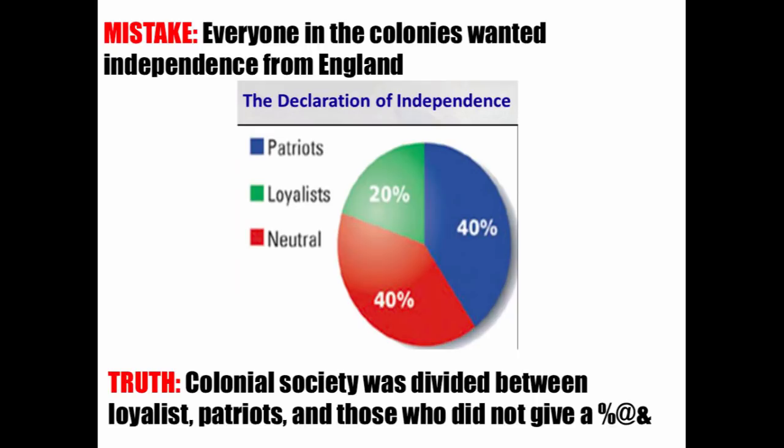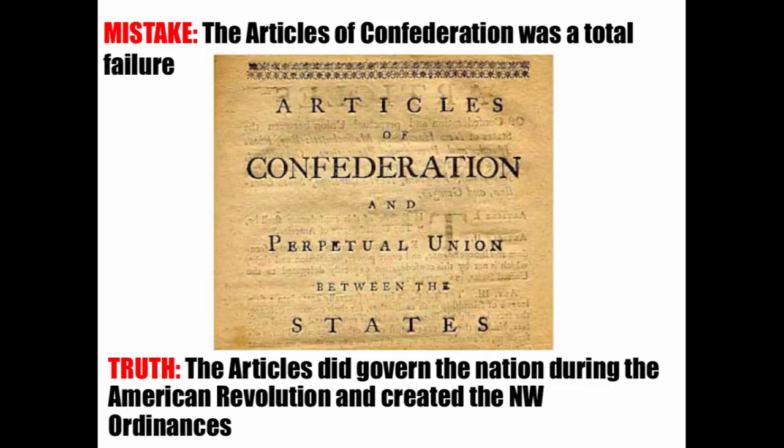A mistake often made: the Articles of Confederation was a total failure. The truth is the Articles did govern the nation during the American Revolution and created the Northwest Ordinances. We need to give credit to the AOC — yes, it couldn't tax and was very weak, but it did do some good stuff.